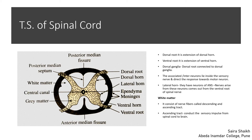In the grey matter, there are three horns: the dorsal horn on the dorsal side, the ventral horn on the ventral side, and the lateral horn on the lateral side. The dorsal horn extends further as the dorsal root, and the ventral horn extends further as the ventral root. The lateral horn does not have a lateral root, but nerve fibers from its cells exit through the ventral root. The nerves present in the lateral horn region are for the autonomic nervous system.